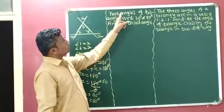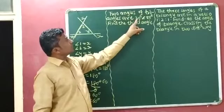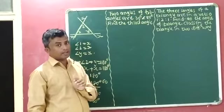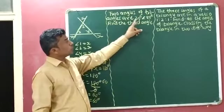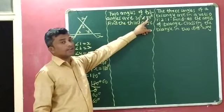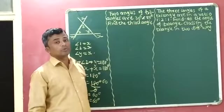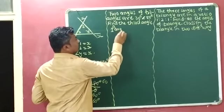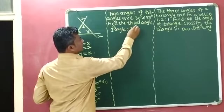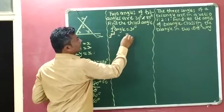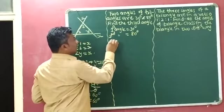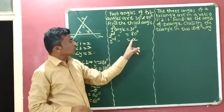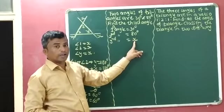Next question: two angles of a triangle are 30 degrees and 80 degrees. Find the third angle. From this triangle, two angles are given to us — the first angle is 30 degrees and the second angle is 80 degrees. The third angle we have to identify, so we consider the third angle equal to x.